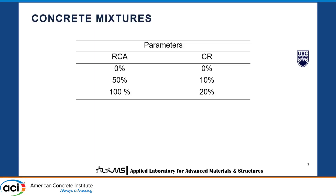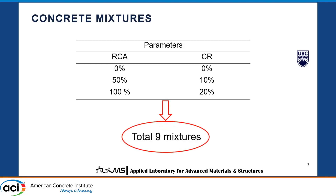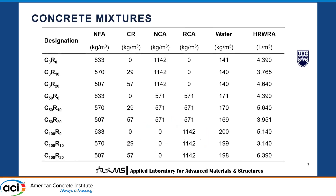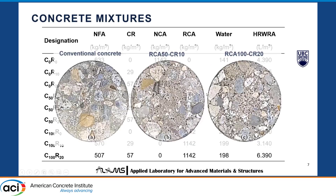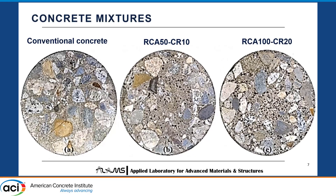For the experimental part, three replacement levels for both RCA and crumb rubber were considered, and in total I had nine concrete mixtures. Natural coarse aggregate (NCA) was replaced with RCA by weight at 50% and 100%. Sand was replaced with crumb rubber by volume at 10% and 20% replacement levels. The target design strength was 35 MPa, and the water amount was adjusted for mixtures containing RCA. This is a look at the cross-section of my concrete mixtures: the leftmost is conventional concrete, the middle had 50% RCA and 10% rubber, and the rightmost had 100% RCA and 20% rubber.